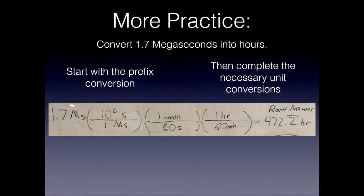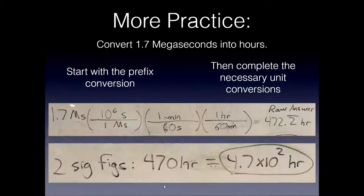Now the raw answer in the calculator is 472.22222 forever. I cannot write that as my final answer. Why? Go back to your original measurement you were given, 1.7 megaseconds. How many sig figs does that have? It has two. So I have to round this to two significant figures. You'd have to round to the tens place. So the two after it would round down. So you'd have 470. For some people this is a little odd, because you're past the decimal on the left side. So some people would immediately write this in scientific notation, so that it's clear that zero is not significant. Now I only have these two significant digits, 4.7 times 10 to the two hours.